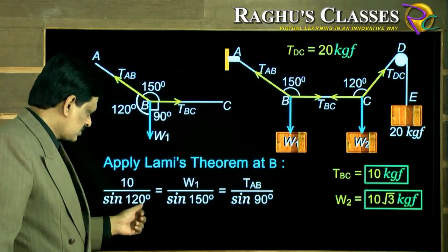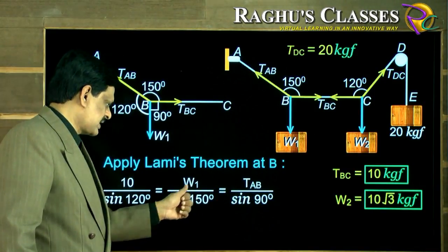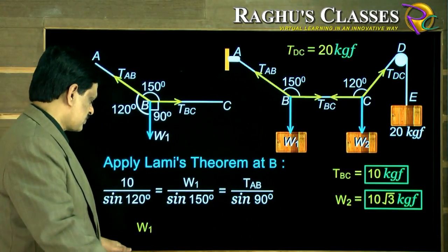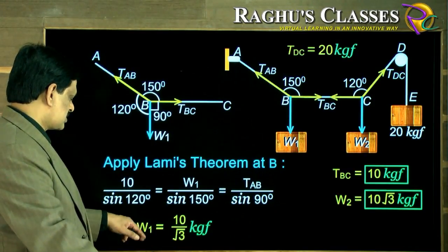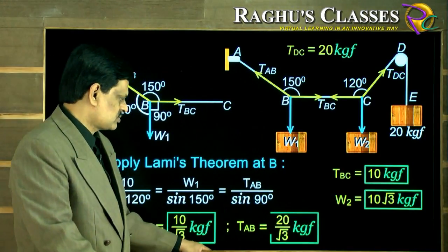Here both are known, denominator known, only one unknown here, also one unknown. Equate these two to get W1, equate the third one with the first to get TAB. So W1 is 10 upon root 3 kgf and TAB is 20 upon root 3 kgf.